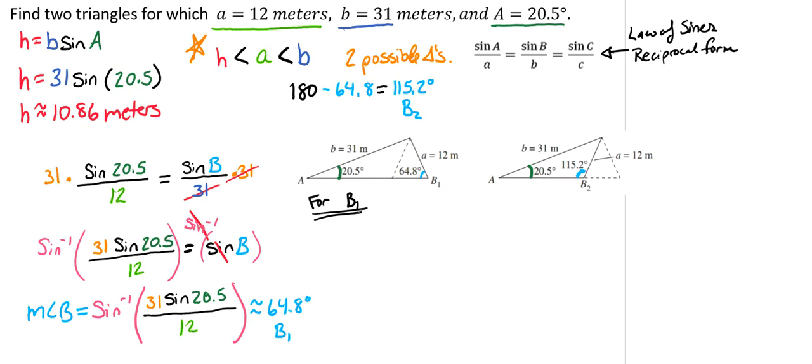So here, if we have angle A and angle B1, we can find our angle C by the triangle sum formula. So we can go ahead and plug that in and get our answer. And so we can take the 180 degrees, subtract our 20.5 and our 64.8, and we're going to see that angle C is 94.7 degrees.